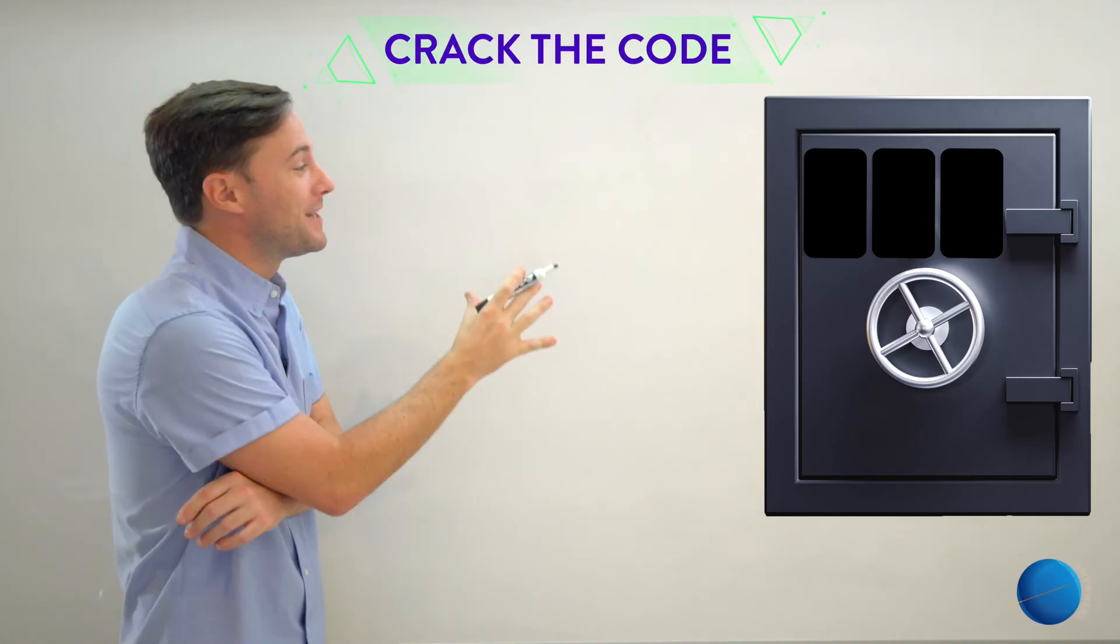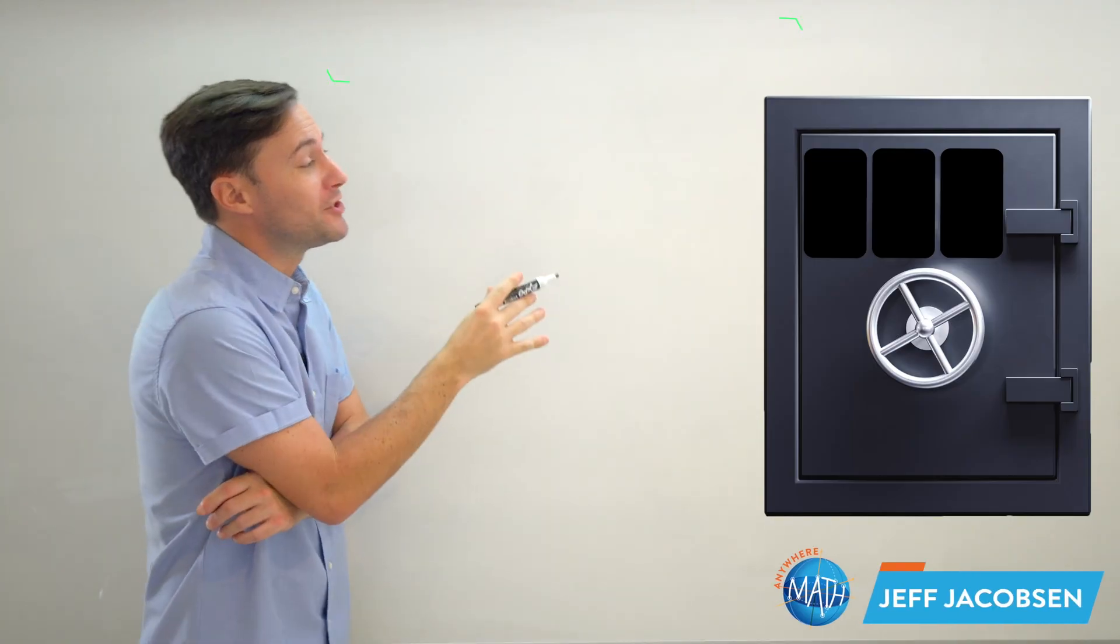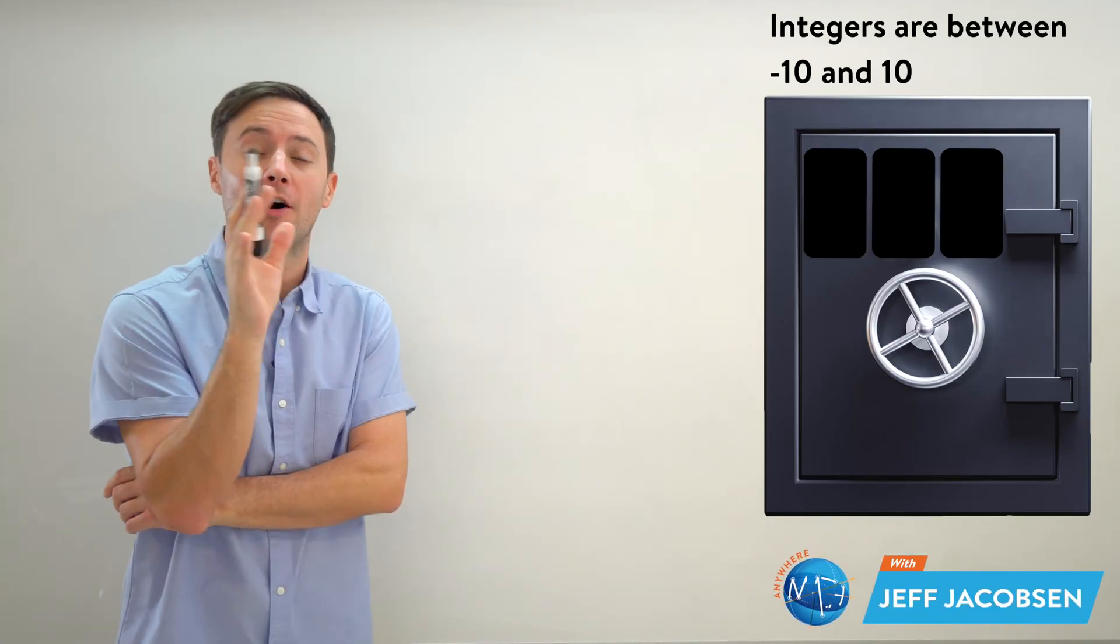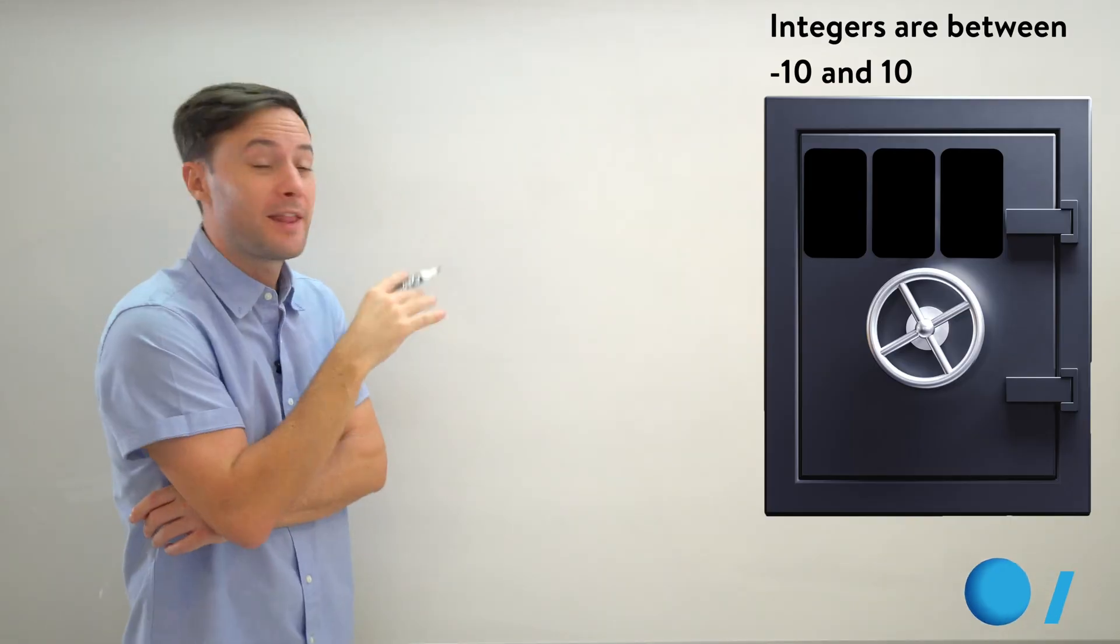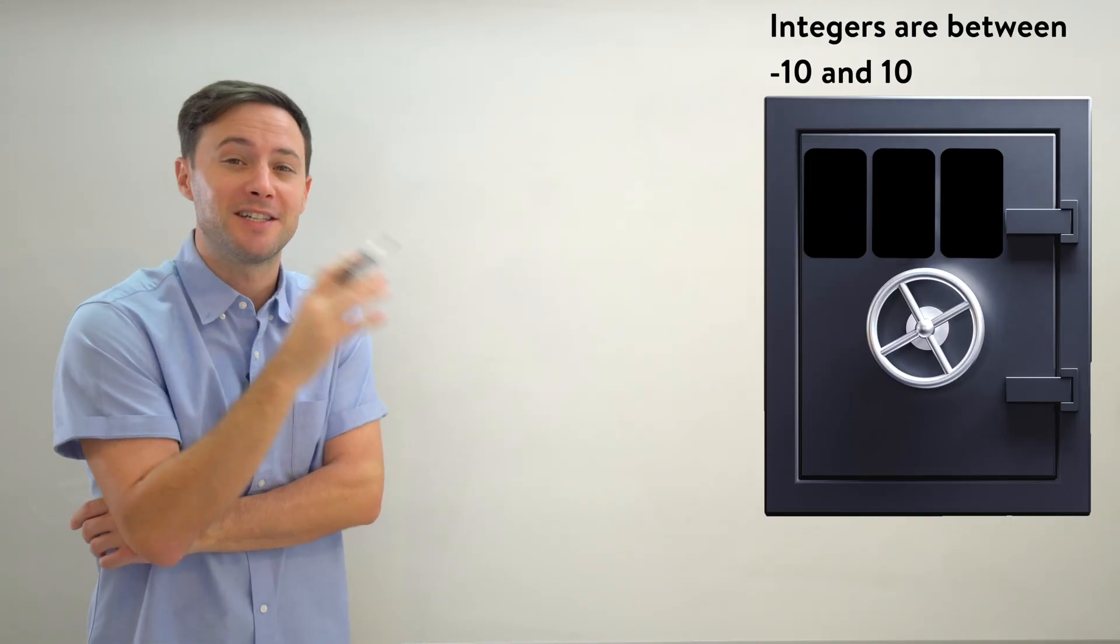Okay, we have a combination lock that we're going to try to break into. The integers to the combination are between negative 10 and 10, and we've got three hints to help us find out what that exact combination is going to be.